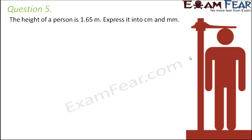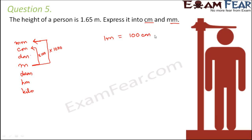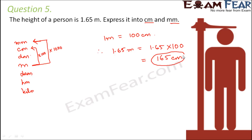Question number five: the height of a person is 1.65 meters — express it in centimeters and millimeters. Using the unit ladder (milli, centi, deci, meter, deca, hecto, kilo), converting meter to centimeter is two steps upward, so multiply by 100. One meter equals 100 centimeters, therefore 1.65 meters equals 1.65 × 100 = 165 centimeters.